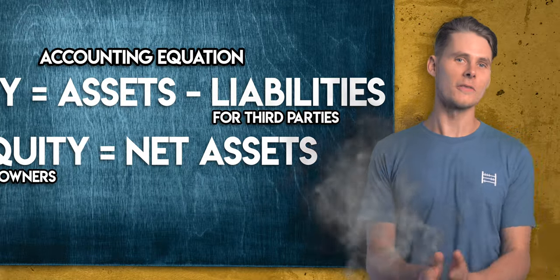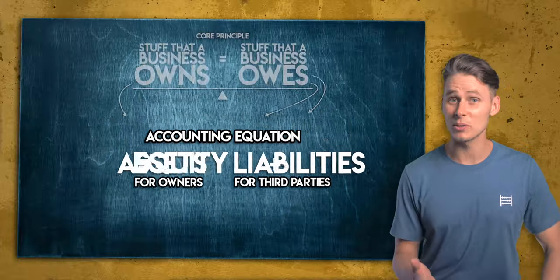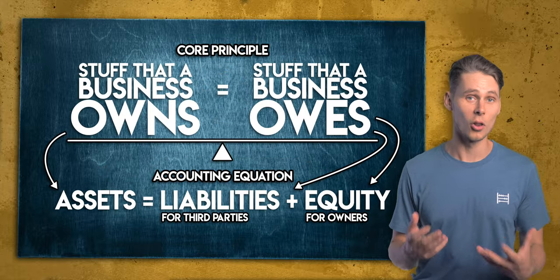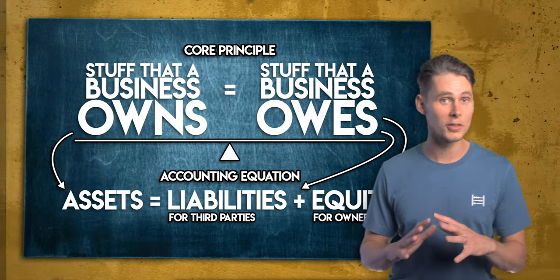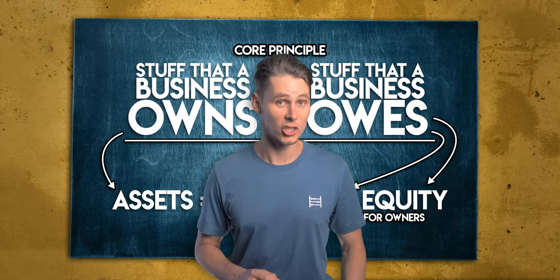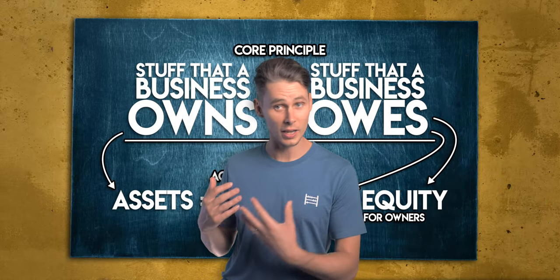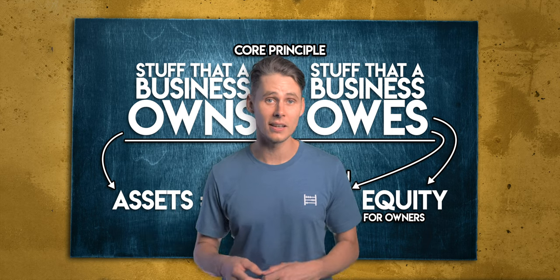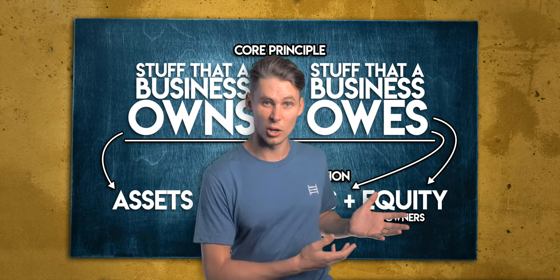We went over time there — dang it! So there you have it: the accounting equation is assets equal liabilities plus equity. I've summarized all of this on my free accounting equation cheat sheet which you can download here, and if you'd like to learn more about accounting, then why not watch this video next?